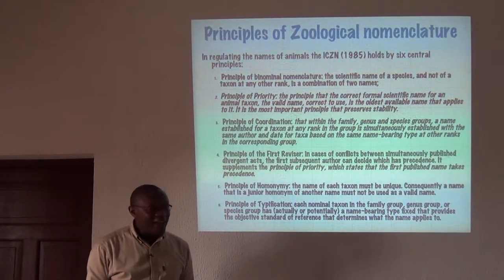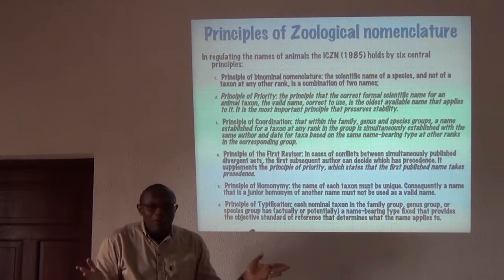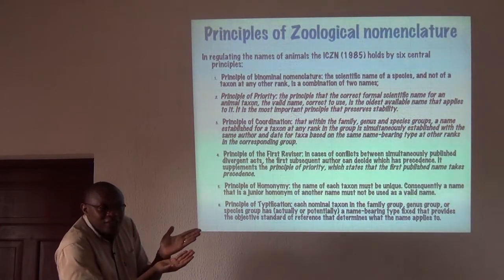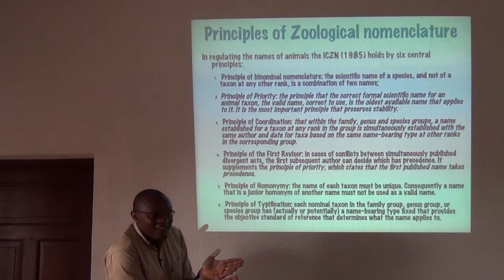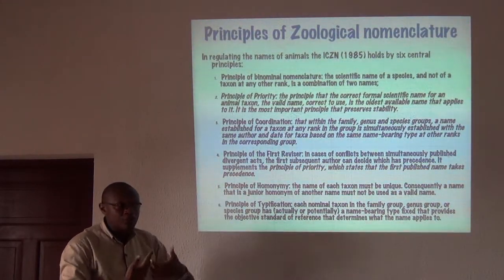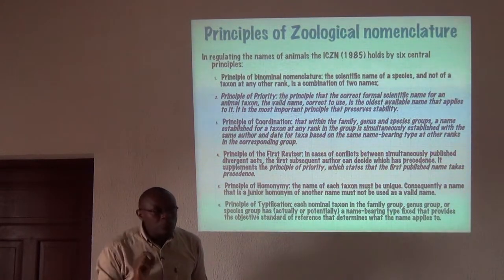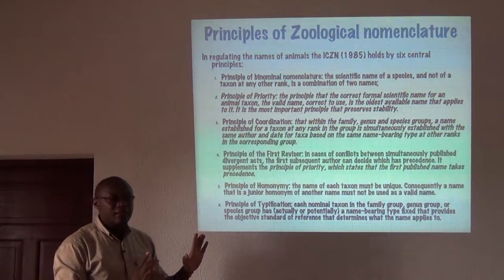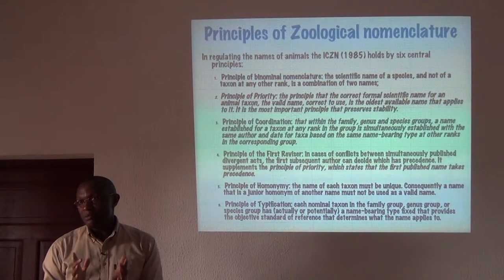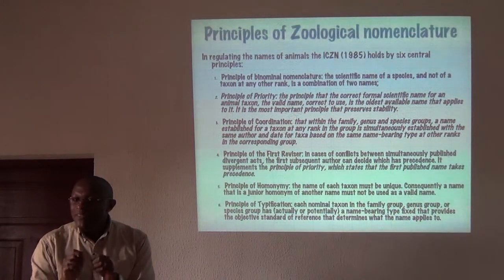Eventually someone will recognize that the obscure publication was valid and that name will have priority, arbitrated by the commission, so the first published name would be used. There may be exceptions, especially where a change would bring more confusion than the status quo, and the commission may rule on those cases. We are giving you the key principles, but exceptions may be made for the purpose of maintaining order.